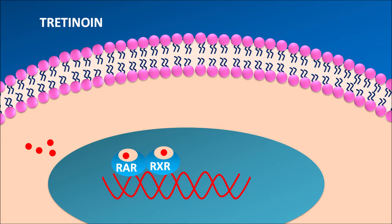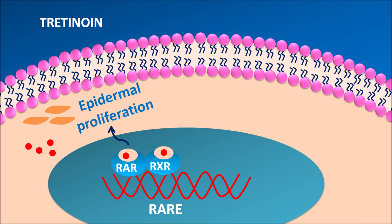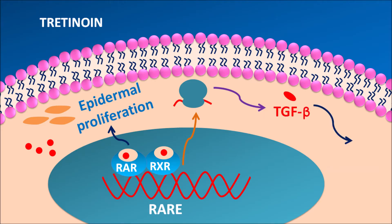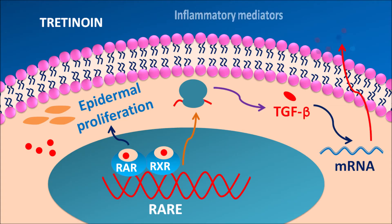After activation, these receptors can form a dimerization — a heterodimer where the retinoic acid receptor forms a dimer with the retinoid X receptor. This dimer can interact with the DNA at a particular region called RARE, the retinoic acid responsive elements. Here it undergoes gene transcription and produces protein synthesis. Because of these actions and activation of retinoic acid receptors, it may result in increased epidermal proliferation, which reduces cornification and acne formation. Similarly, the activation of retinoid X receptors may produce cell differentiation, which increases apoptosis. Finally, interaction with the DNA may increase protein synthesis, and these proteins can release mediators like TGF-beta, which may induce the formation of various mRNA types that control the release of inflammatory mediators.